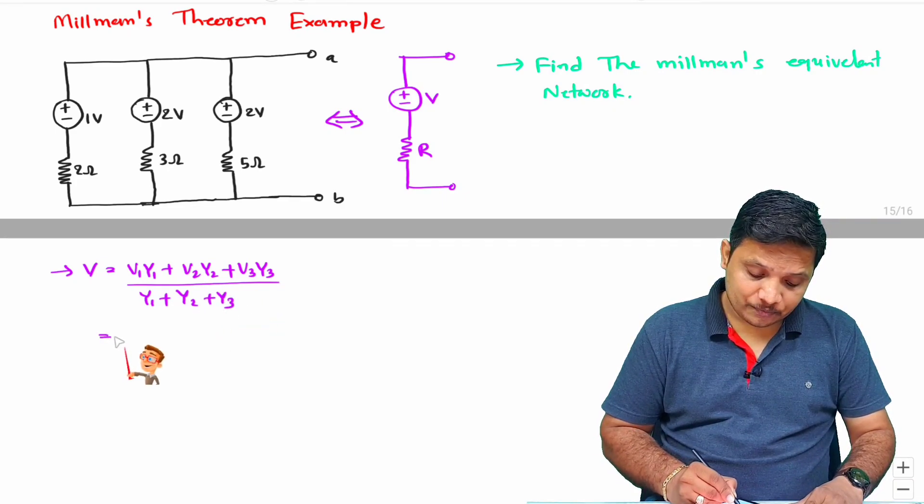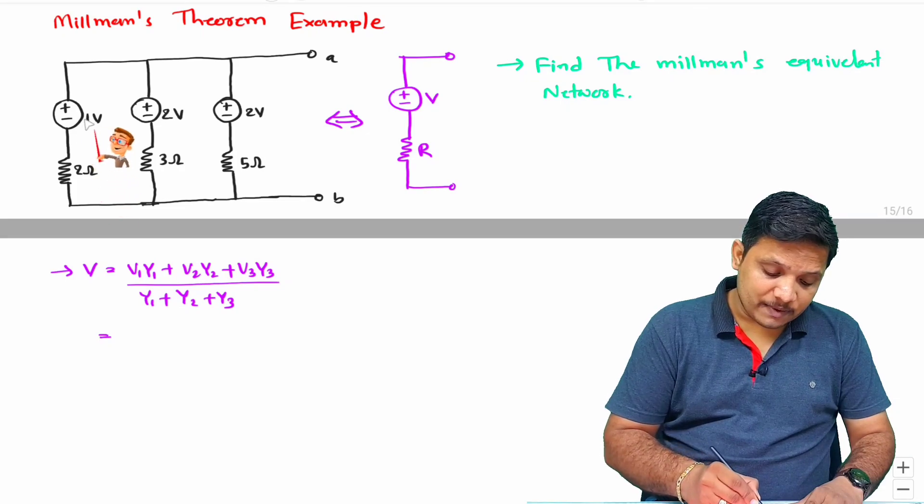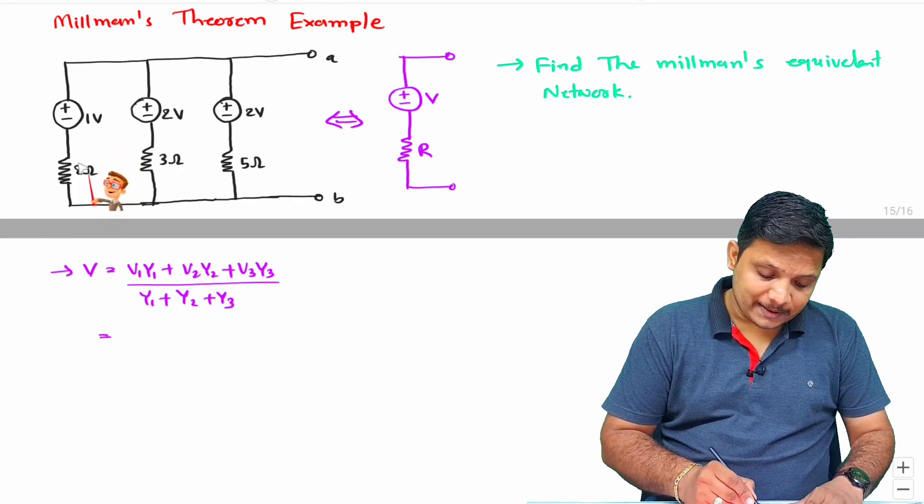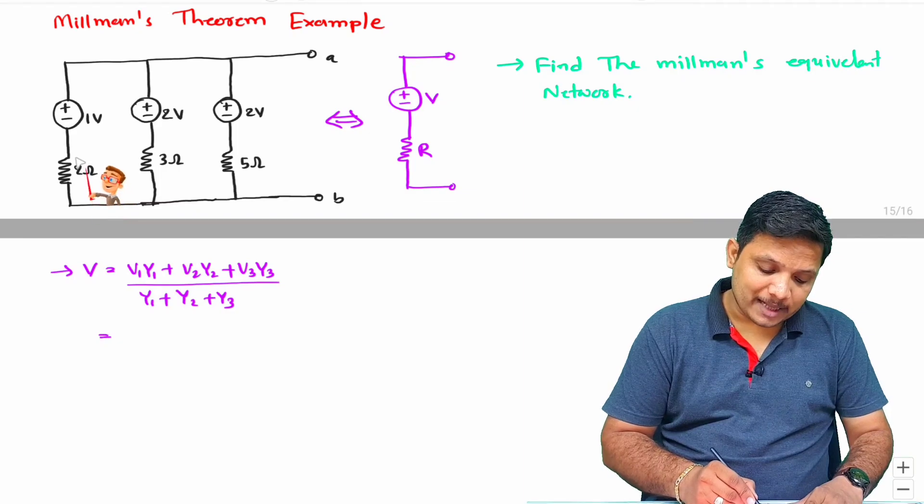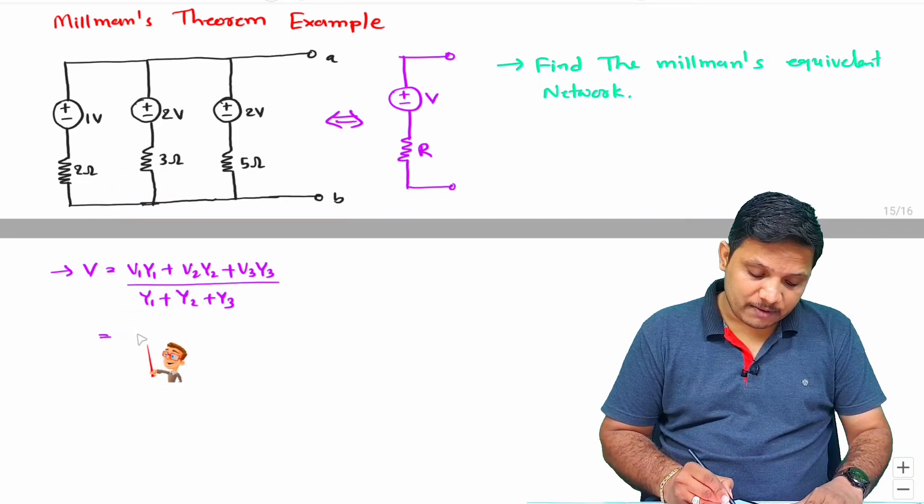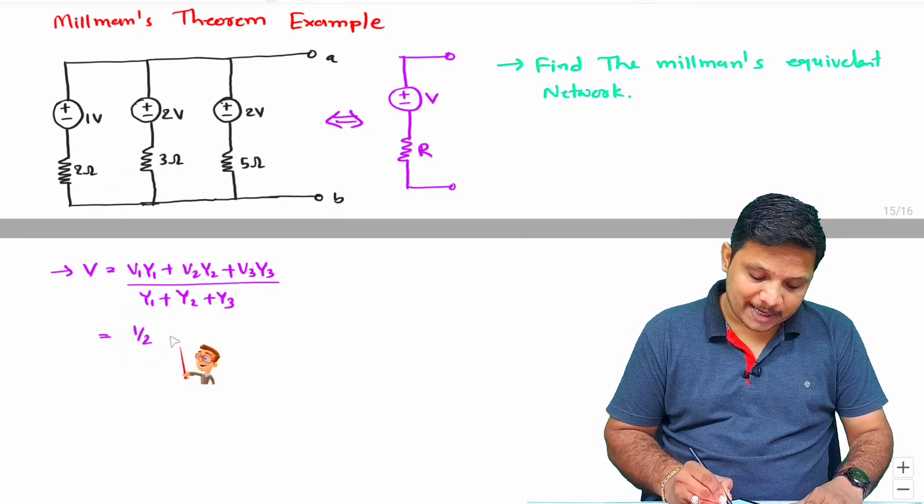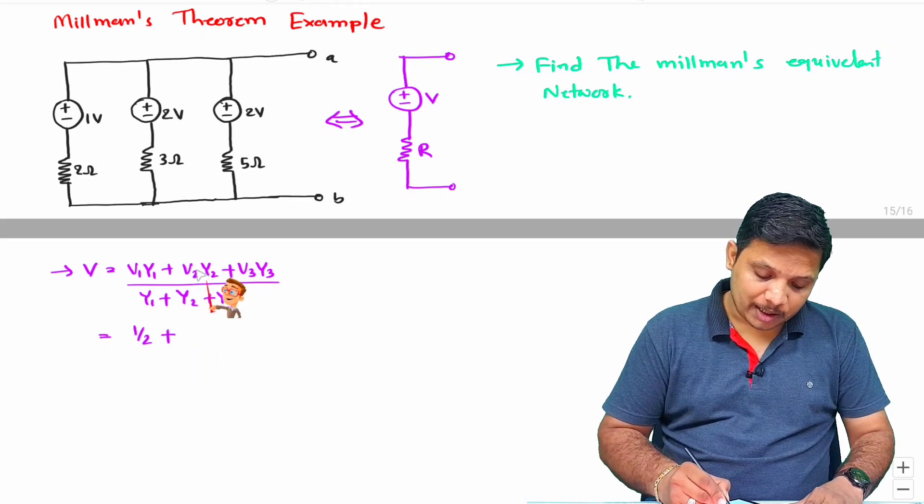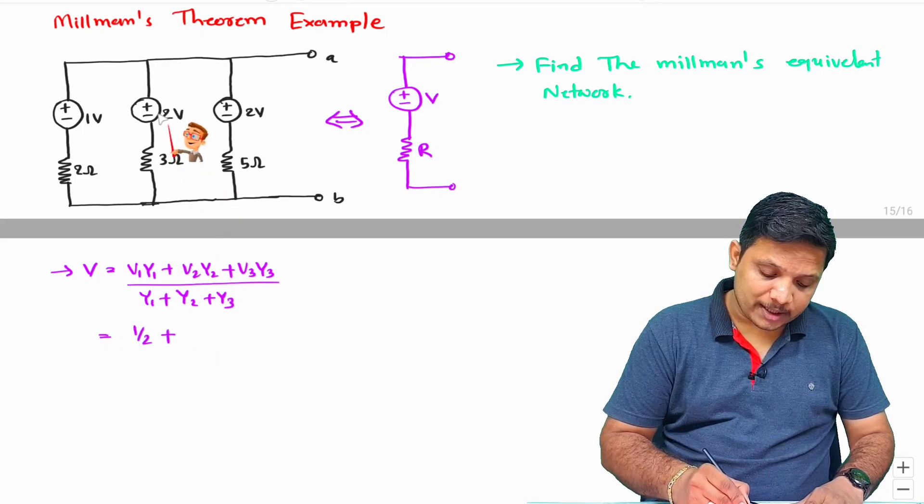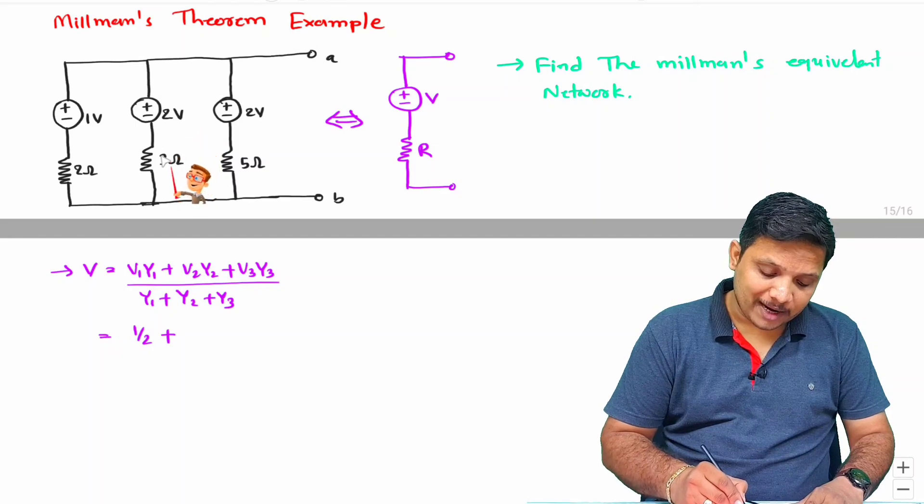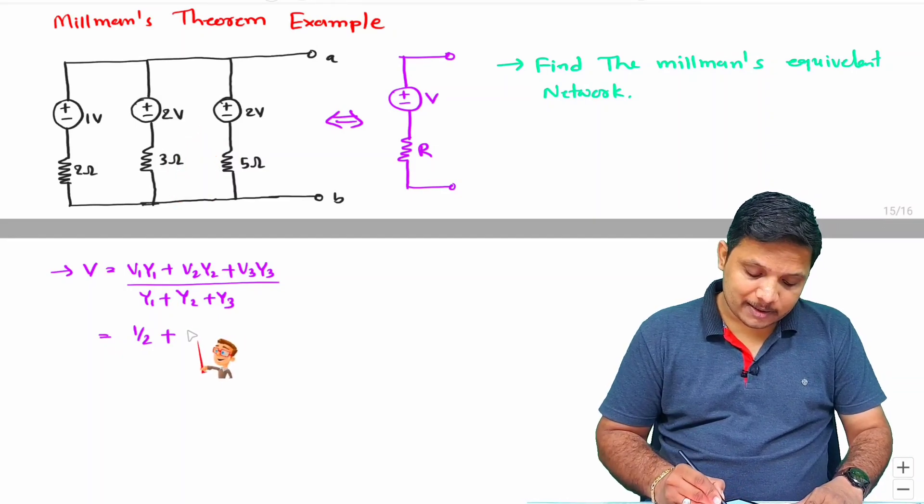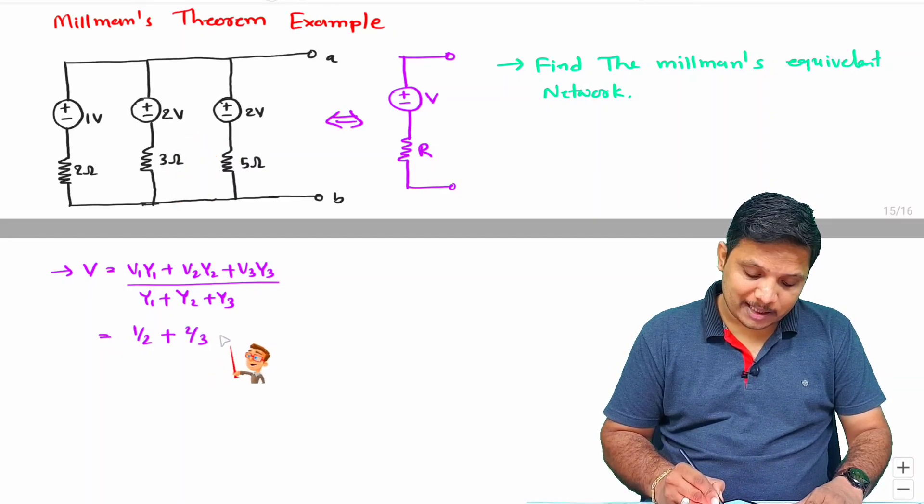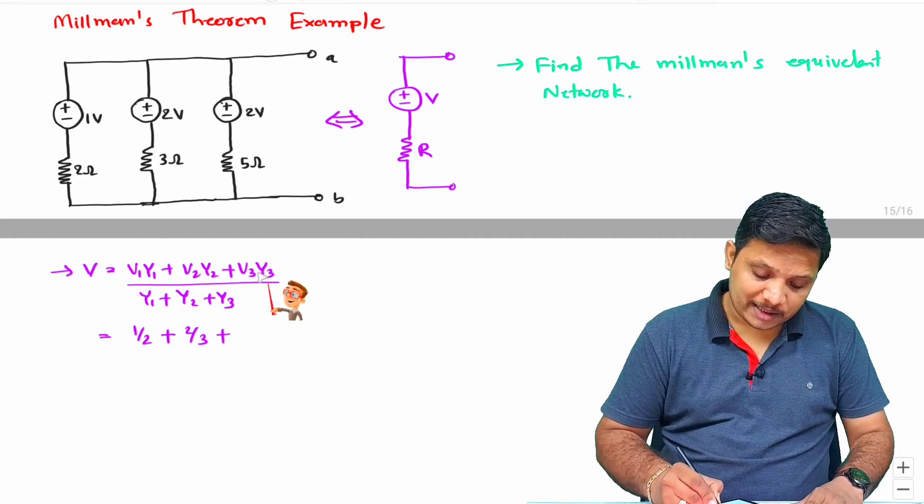V1 is 1 and Y1 is 1 by resistance, so that is 1 by 2. V1Y1 is 1 by 2 plus V2Y2. V2 is 2 and Y2 is 1 by 3, so that is 2 by 3 plus V3Y3.